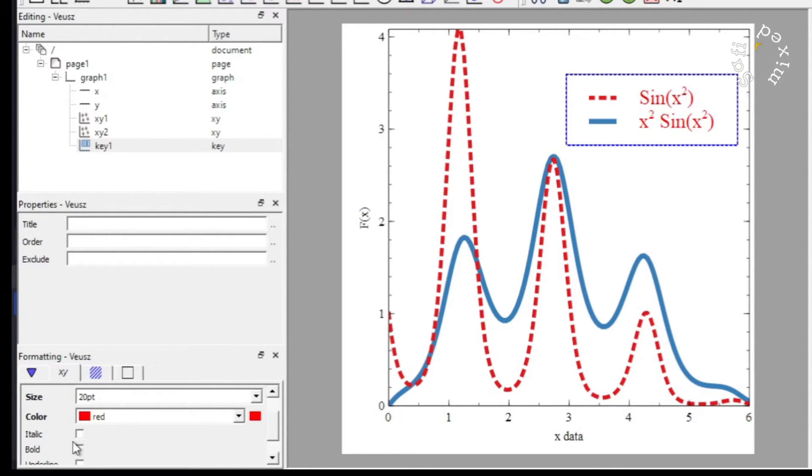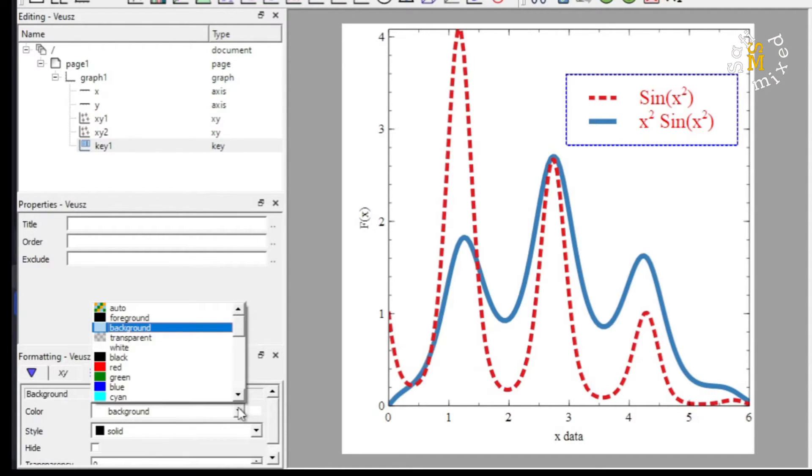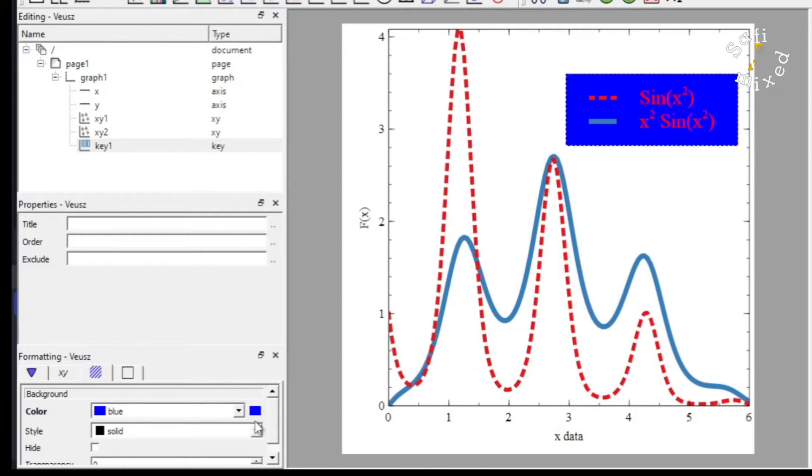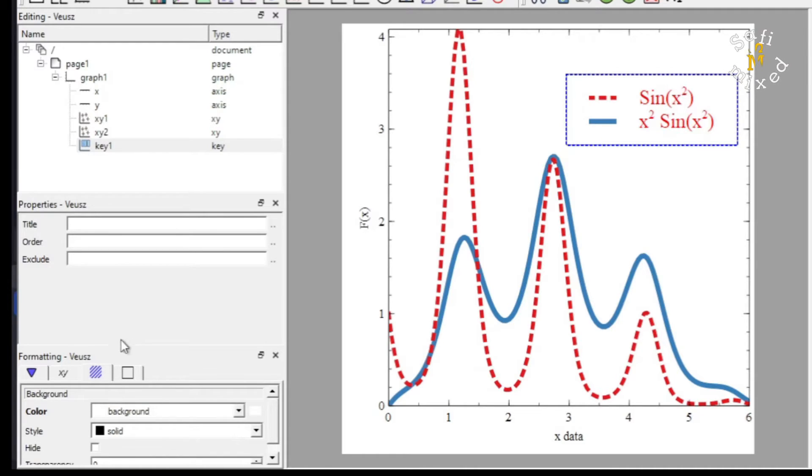Similarly I can change the style of the fonts to italic, bold, etc. From here, this tab, I can change the background of the style. For example, if I choose red, the background will turn red. If I choose blue, the background would turn blue like this one. So I leave this as it is.